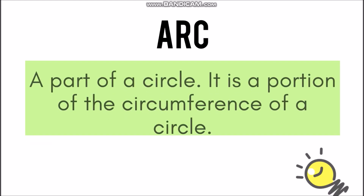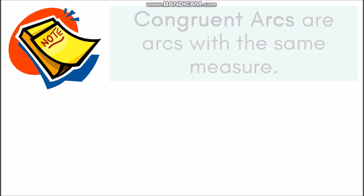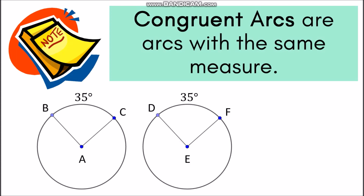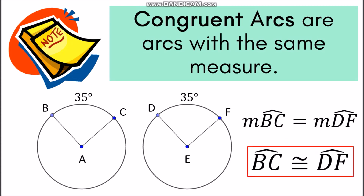We also have arcs. An arc is a part of a circle, or it is a portion of the circumference of a circle. Congruent arcs are arcs with the same measure. So if arc PC and arc DF have the same measurement, therefore arc PC is congruent with arc DF, and vice versa.